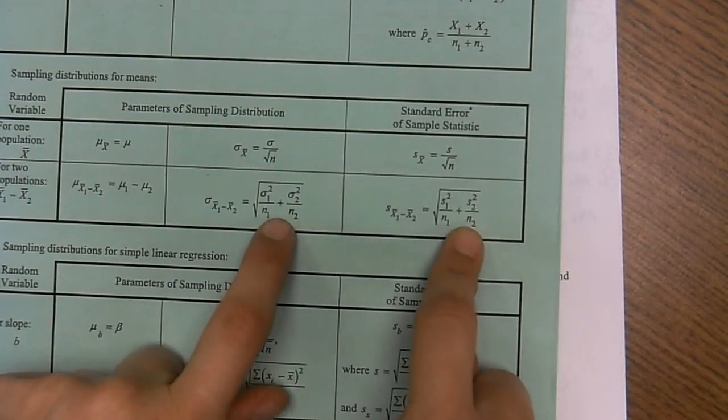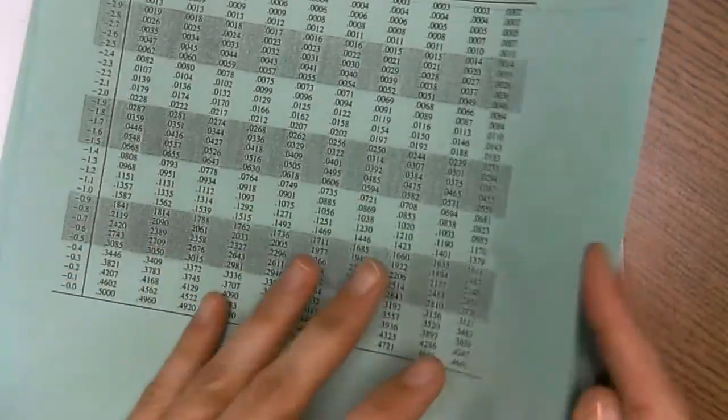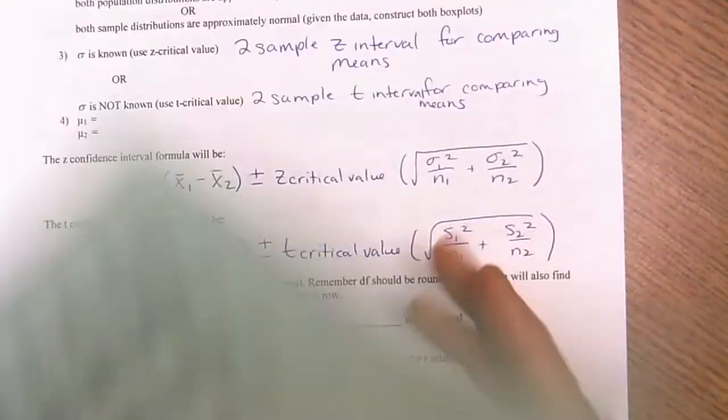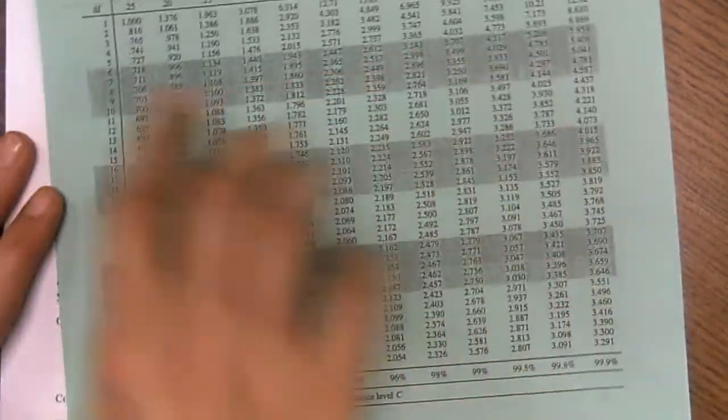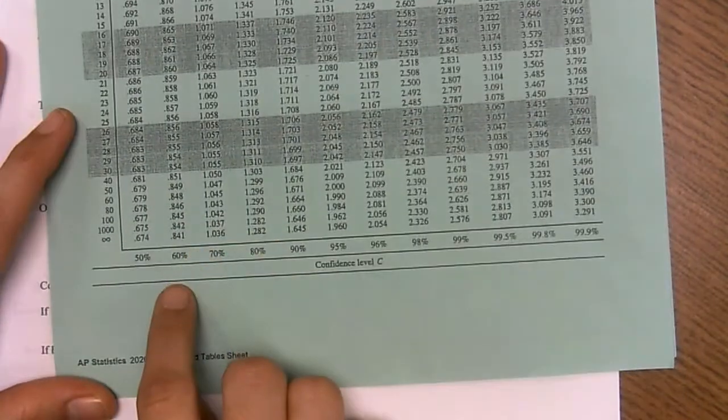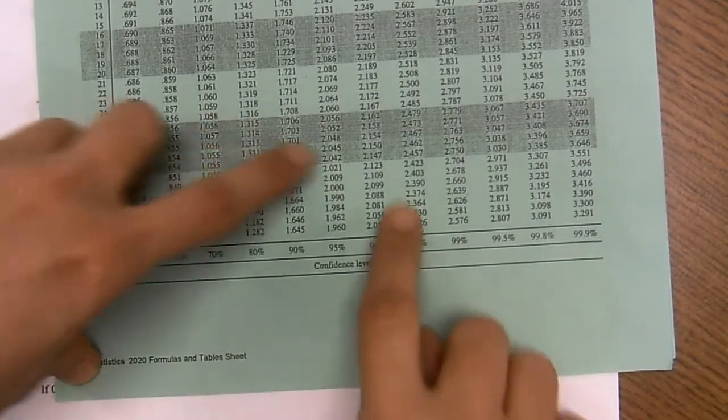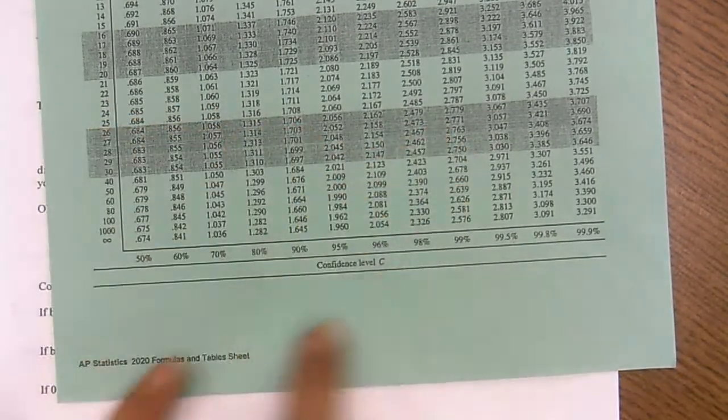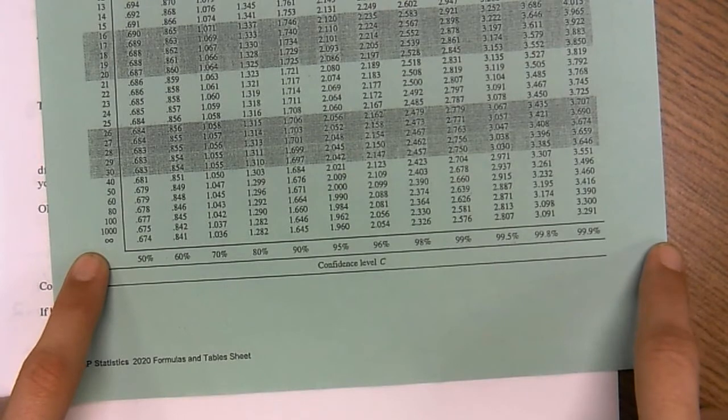These were our denominators yesterday. Now go back to chapter nine. So if it's a T critical value, we have to use the degrees of freedom and the confidence level down here to find our critical values. Remember that from chapter nine? If it's a Z, we use the infinity row. So those are going to come back again.